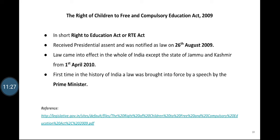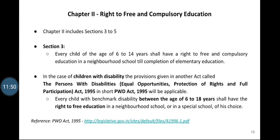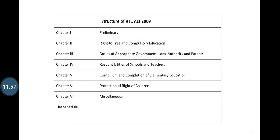The Act has 39 sections spread over 7 chapters, and a schedule which describes the norms and standards of schools. The first chapter includes the definition of words and expressions used in the Act. It is almost similar to the operational definition section in a research paper — it defines terms like government, child, parent, etc.